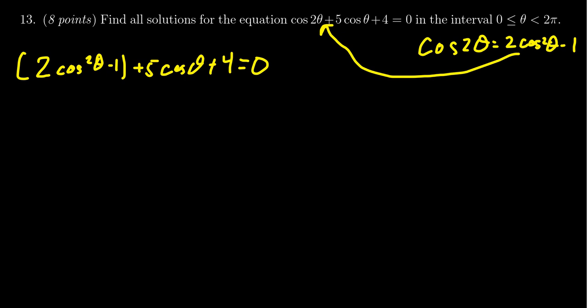Combine like terms if possible. There's a negative 1 and a plus 4, so we can add those together. We get 2 cosine squared theta plus 5 cosine theta plus 3.